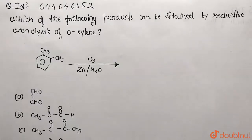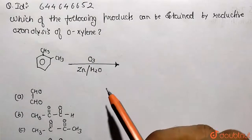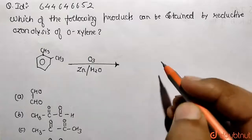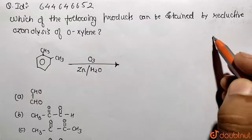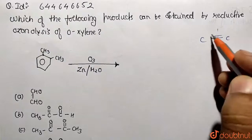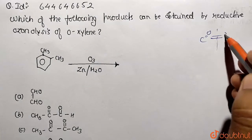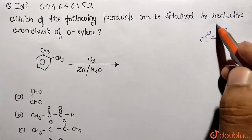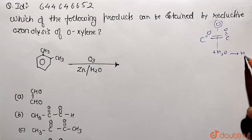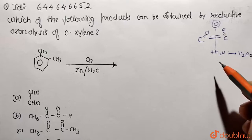Students, in this given question we need to work on: which of the following products can be obtained by reductive ozonolysis of ortho-xylene? The basic principle of ozonolysis is that the double bond is cleaved, forming C=O and C=O on each fragment, and the ozonide is removed with water to form H₂O₂.